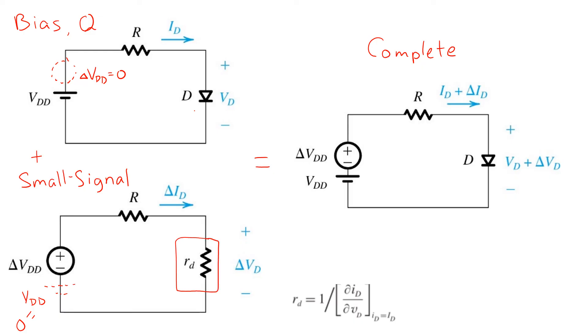And we may recall that RD is related to the slope of the IV characteristic and it's actually given by VT over ID where ID is the bias current that we solved for in the first part.